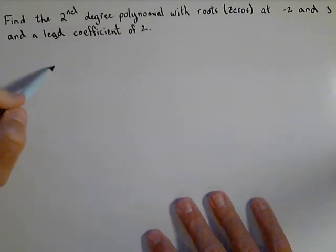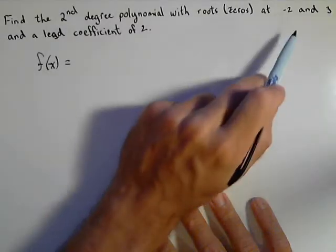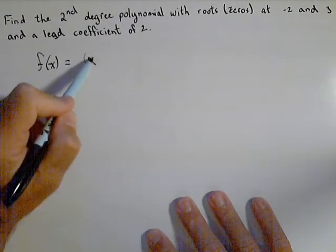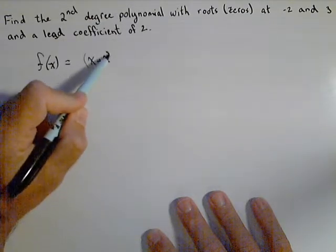So one way we can go about this is we can use our factored form because remember, if negative two is a zero, then x plus two has to be a factor.